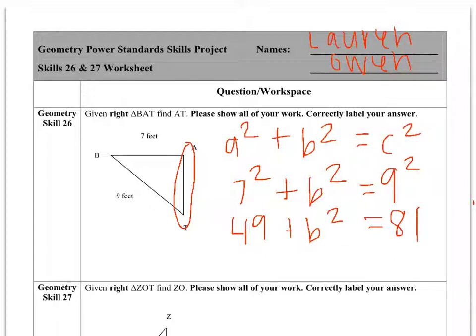Now to get B by itself, we have to subtract 49 from both sides. That leaves us with B squared equaling 32.